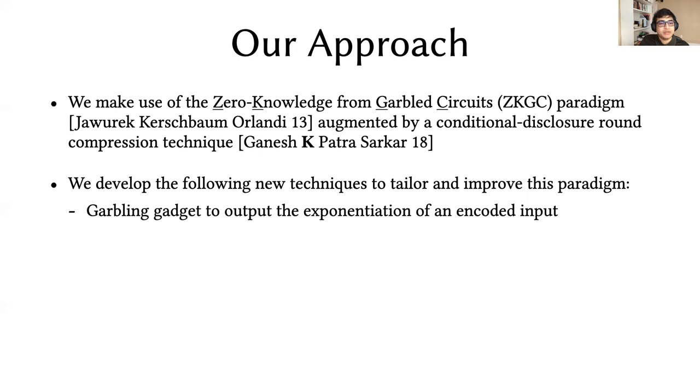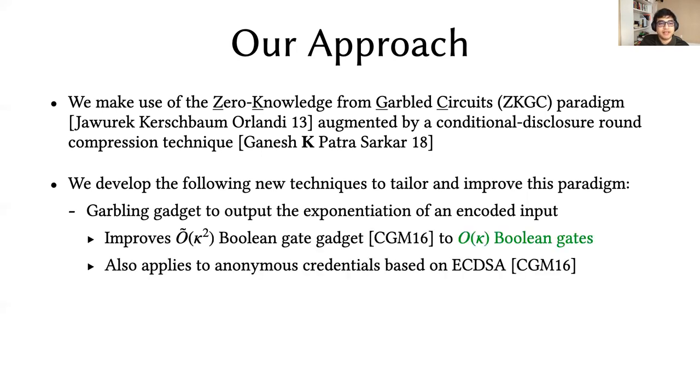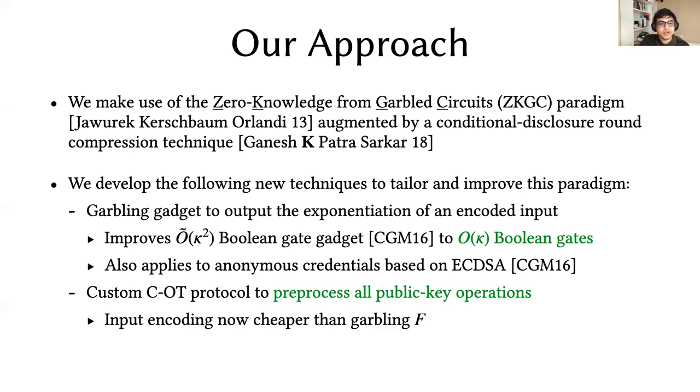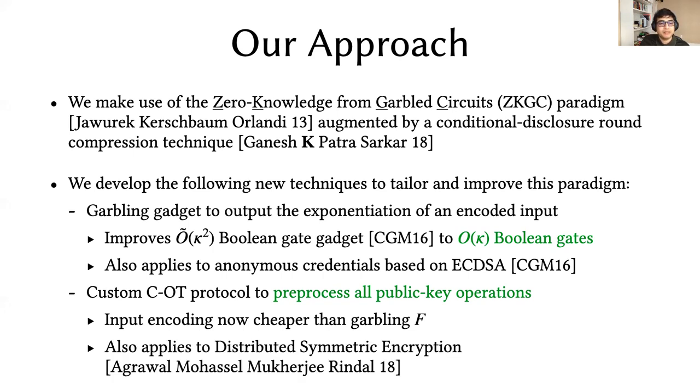We developed the following new techniques to tailor and improve this paradigm. Firstly, a garbling gadget to output the exponentiation of an encoded input, which improves an equivalent gadget in the work of Chase and others, and also applies to anonymous credentials. Additionally, we construct a custom committed OT protocol that allows us to pre-process almost all of the public key operations. This makes input encoding now cheaper than garbling the pseudorandom function, and it also finds application in distributed symmetric key encryption.